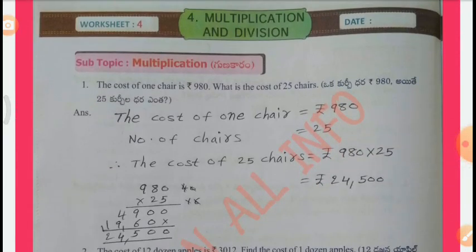Worksheet 4, Subtopic: Multiplication. The cost of one chair is Rs. 980. What is the cost of 25 chairs? Solution: Cost of one chair = Rs. 980. Number of chairs = 25. Therefore, the cost of 25 chairs = Rs. 980 x 25. By multiplication, we get Rs. 24,500.